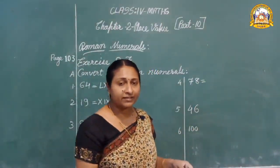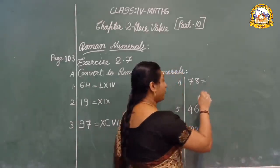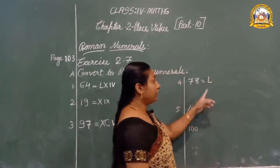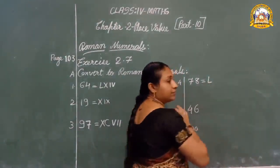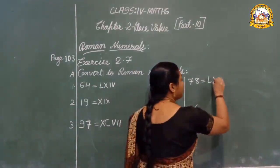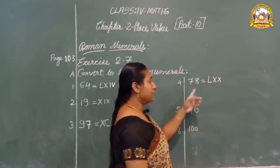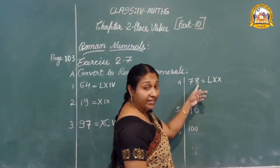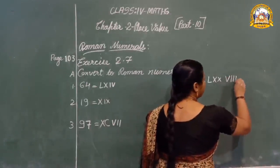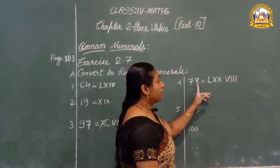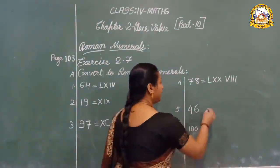For 70: fifty plus twenty — L and double X — LXX. For 8: V and triple I's — VIII. So 78 is LXXVIII.